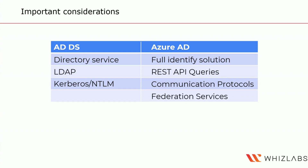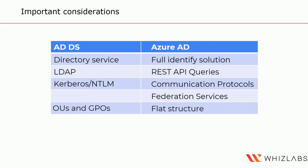ADDS allows federation by using an extension called ADFS that allows claims authentication. Azure AD includes federation services, but also includes the ability to connect to third-party services like Facebook. ADDS has the ability to utilize organizational units (OUs) and group policy objects (GPOs), but in Azure AD there is a flat structure for users and groups, so there is no longer an ability to utilize forests.